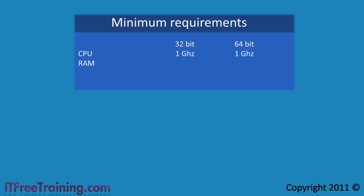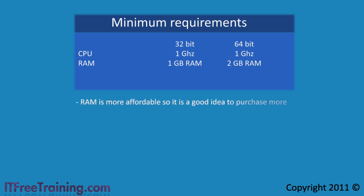The RAM requirements have increased since Windows Vista. For the 32 bit version you need 1 gigabyte of RAM, while the 64 bit version needs 2 gigabytes of RAM. RAM is more affordable so it is a good idea to purchase more, as Windows 7 will use the extra RAM to increase the system's performance.